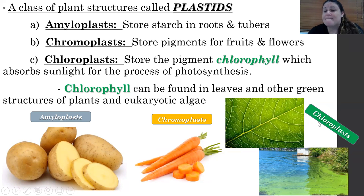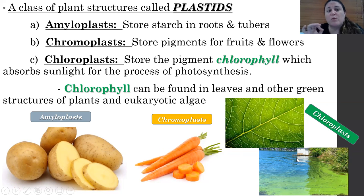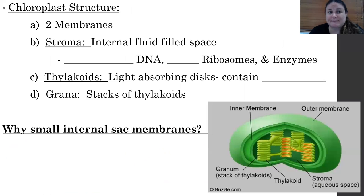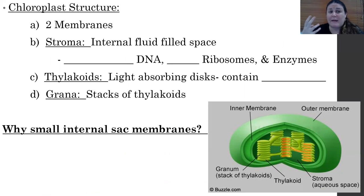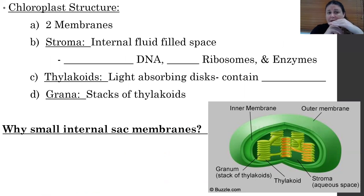The chloroplasts found in plants and algae are the ones we're most familiar with, and they contain the pigment chlorophyll, which absorbs sunlight for the process of photosynthesis. Now let's talk about their structure.